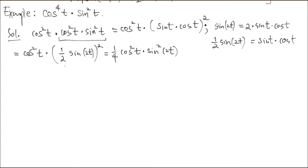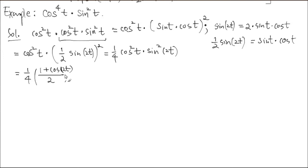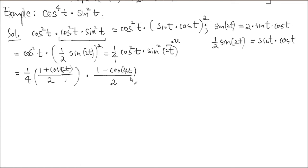This one becomes cosine squared T times — and this whole thing is now (1/2) sine 2T, squared. So we have 1/4 coming out — 1/2 is squared — and cosine squared T times sine squared 2T. We have squared terms, so let's keep lowering the power. For cosine squared T, change that square power to first power: it's (1 + cos 2T)/2. For sine squared 2T, treat the inside as u — so it's (1 − cos(2·2T))/2 = (1 − cos 4T)/2.